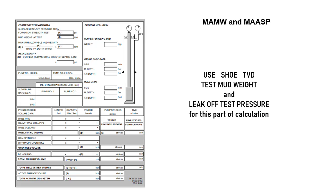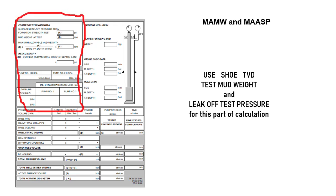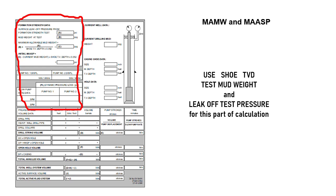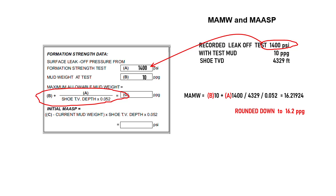Now we move to the upper left corner for maximum allowable mud weight and MAASP calculations. We will use shoe TVD, leak-off test pressure, and mud weight at test. The recorded leak-off test pressure is 1400 psi, with a 10 ppg test mud weight, and shoe TVD of 4329 feet.